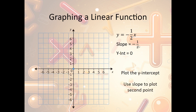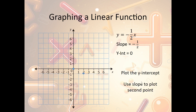Remember, slope is change in y over change in x — or as you may have heard it, rise over run. My change in y is negative 1, so I go down 1. My change in x is 2, so I go to the right 1, 2, and plot my point. So now I have my first two points. The next step is to connect the dots and draw a line between them. Now I have a linear function graphed that goes through zero and has a slope of negative one-half.